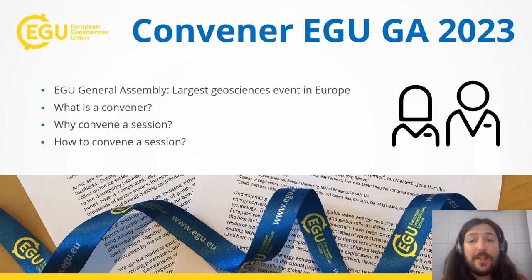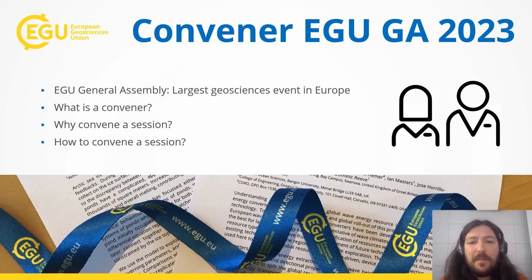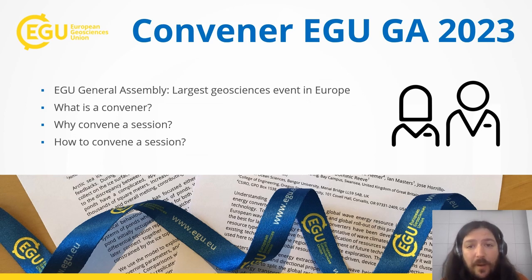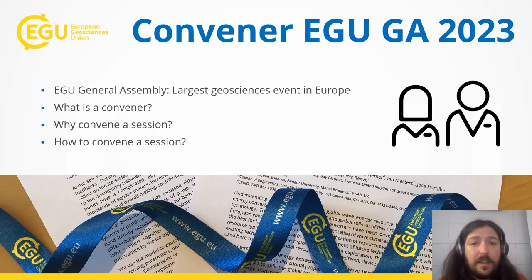The EGU General Assembly is the largest geoscience meeting in Europe. It gathers scientists worldwide to present their research, discuss new ideas and network with peers. Conveners organize, oversee and manage EGU sessions and act as facilitators to authors and promoters of discussion. As a convener, you will propose the session, preview and select abstracts and invite speakers. You will also guide presenters prior and during the session and facilitate discussion to make sure that the session runs smoothly. Conveners shape the scientific program of the conference and showcase research in their fields. You, as a convener, play an essential role.